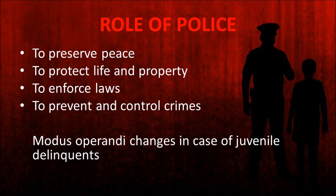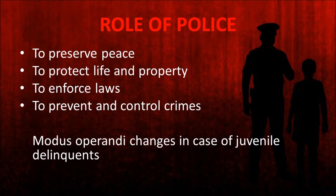But when it comes to juvenile delinquency, the modus operandi of police changes. They have to adopt different methods and are trained differently for this. In case of criminal activities by juveniles, the police have to adopt a different strategy keeping in mind the age and maturity level of juveniles. This is the reason why the Juvenile Justice Act of 2015 has made separate provisions for taking care and protecting juveniles, including provisions for establishing special juvenile police units to tackle cases relating to child delinquency.